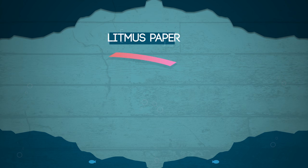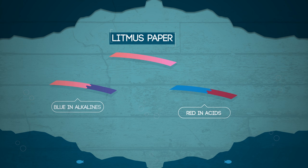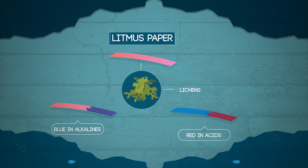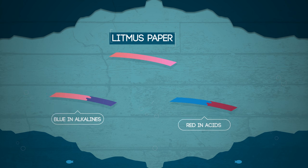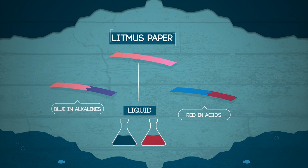Litmus paper is a simple indicator that tells us whether something is acid or alkali. Litmus is red in acids and blue in alkalis. Litmus paper is made from lichens which have been used to dye cloth for hundreds of years. It can be used as a liquid or paper, but the paper is easier and more reliable.